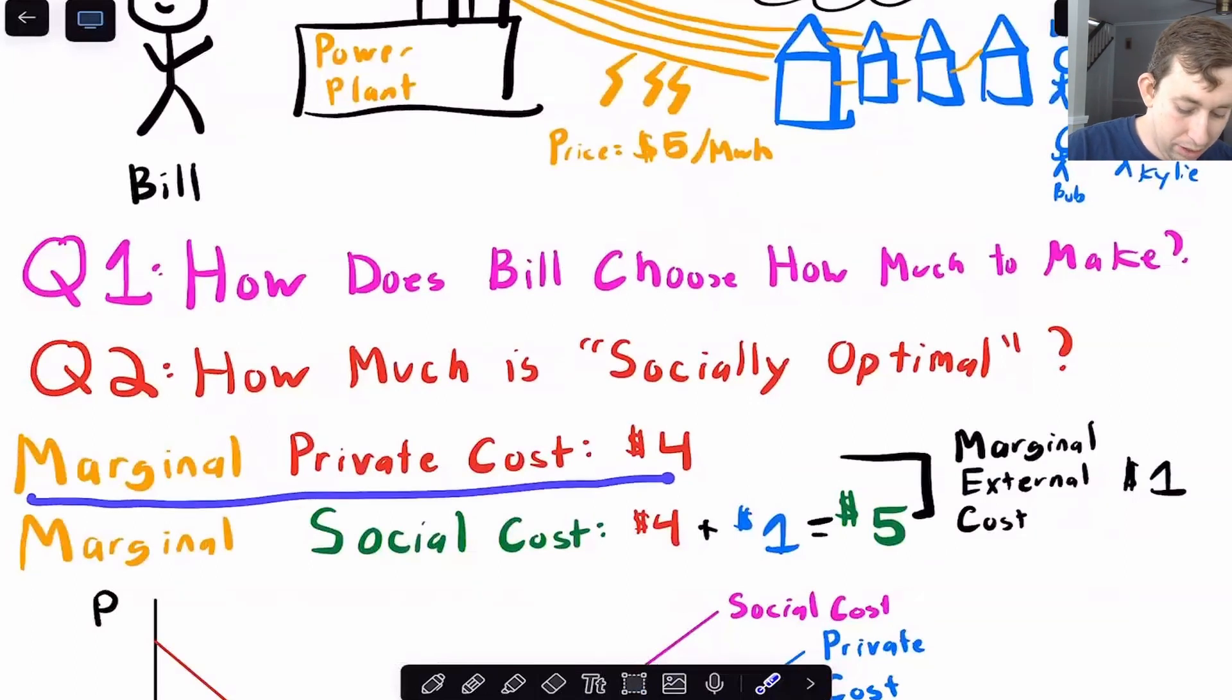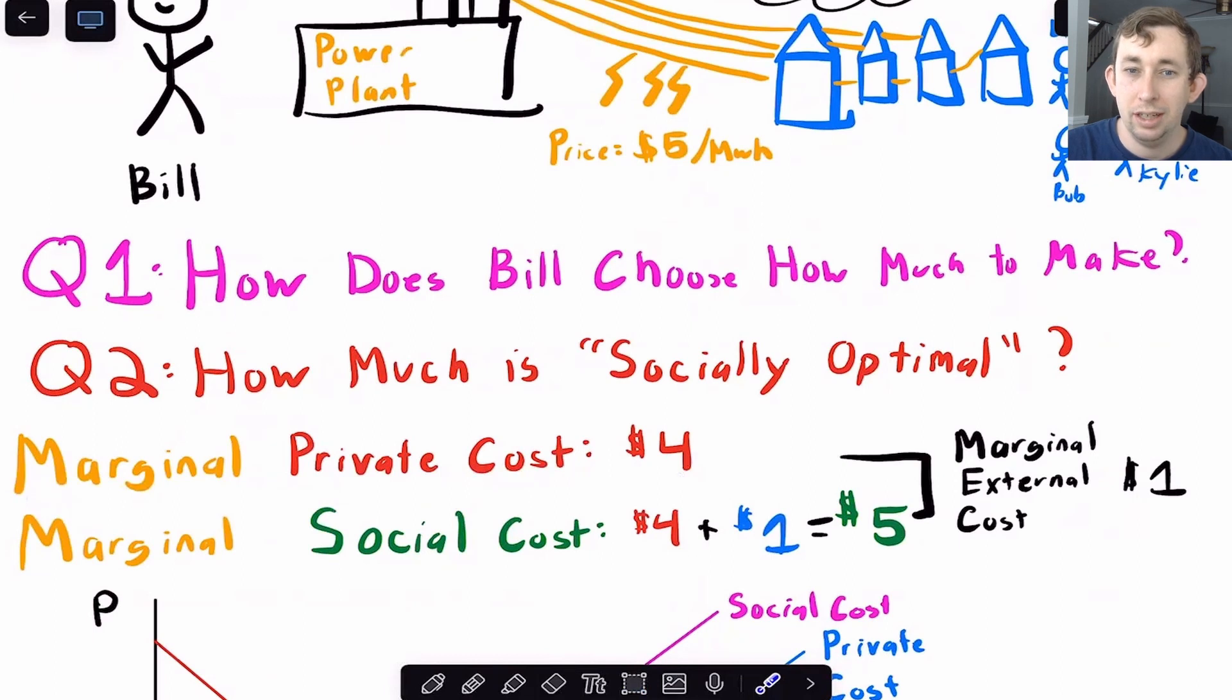And so what we're going to say is the fact that Bill doesn't think about that means that $4 is the marginal private cost because that's not taking into account the pollution that comes about because of the electricity generation. But if we were to think about this impact, let's just say the impact is completely captured by this $1 per megawatt hour in terms of mask spending, we're going to call that the marginal social cost.